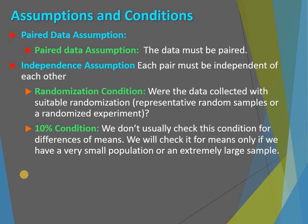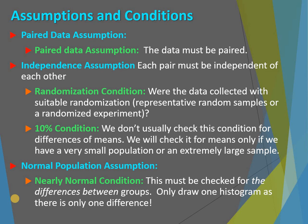You still need to have some randomization — if you don't have randomization, you can't do anything. That randomization helps reduce bias and allows us to push the data onto a larger group. The 10% condition — for means, we normally don't worry unless we know we have a very limited sample, like the top 200 songs where I can't take more than 20. We still have the normal population assumption, but for paired data we're not doing the NPP or histogram on two groups — we do it once on the differences. Go through and do all your subtractions, then do the histogram, NPP, or box plot on those differences.